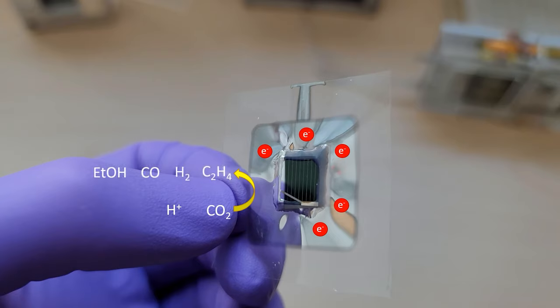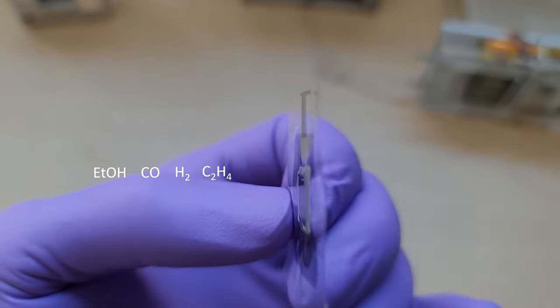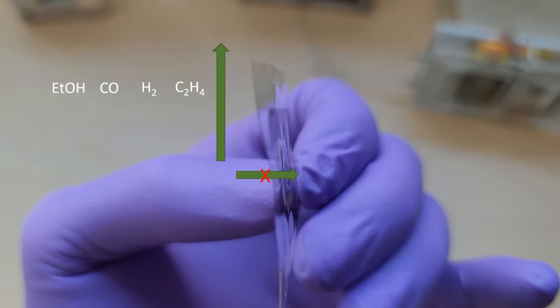When protons and carbon dioxide come in contact with this negatively charged catalyst, they are reduced, they gain electrons into chemical products such as ethanol, carbon monoxide, hydrogen, and ethylene. These products are blocked by the membrane so they can be collected, separated, and stored.